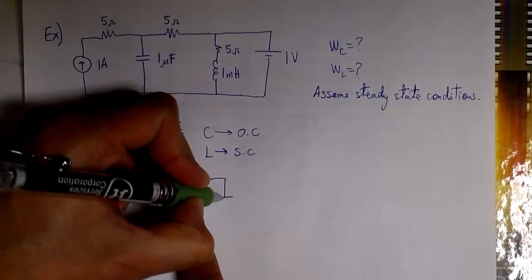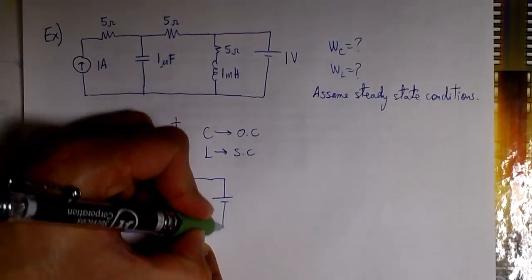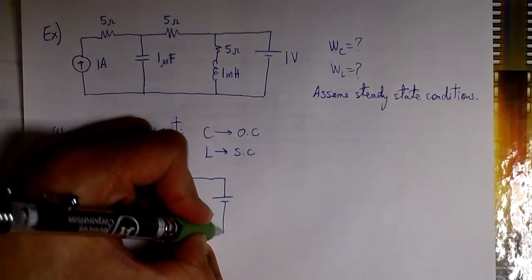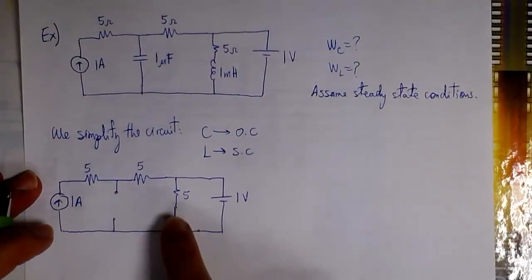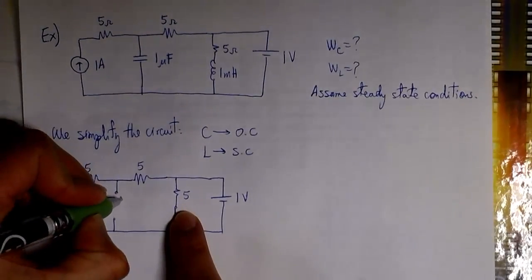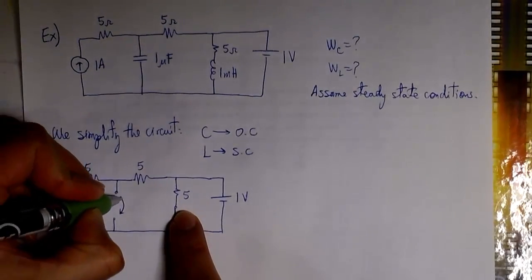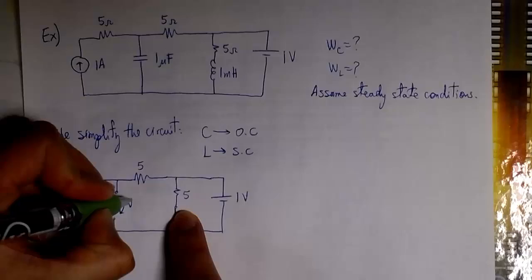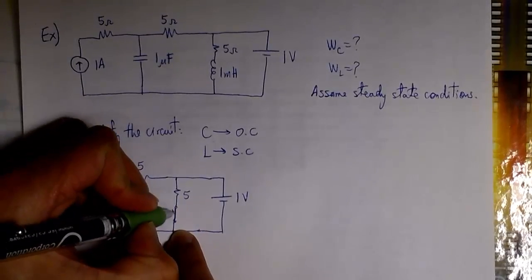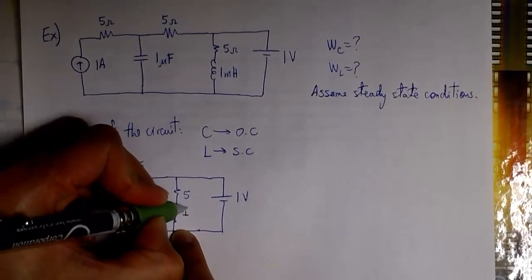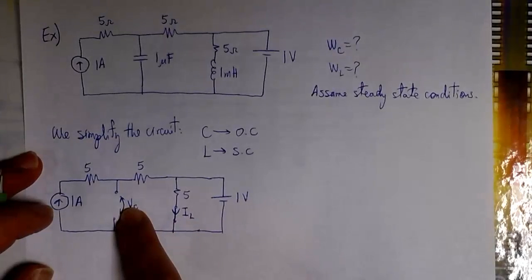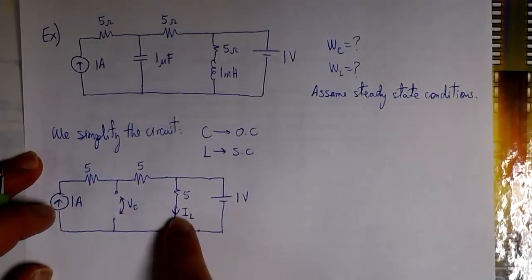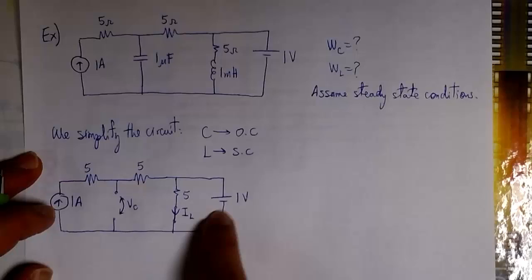Here we have the 1 volt source. We are looking for the voltage between the terminals of C, and the current IL — the current flowing through the inductor. With those two values we are going to find the energy stored in C and the energy stored in L.